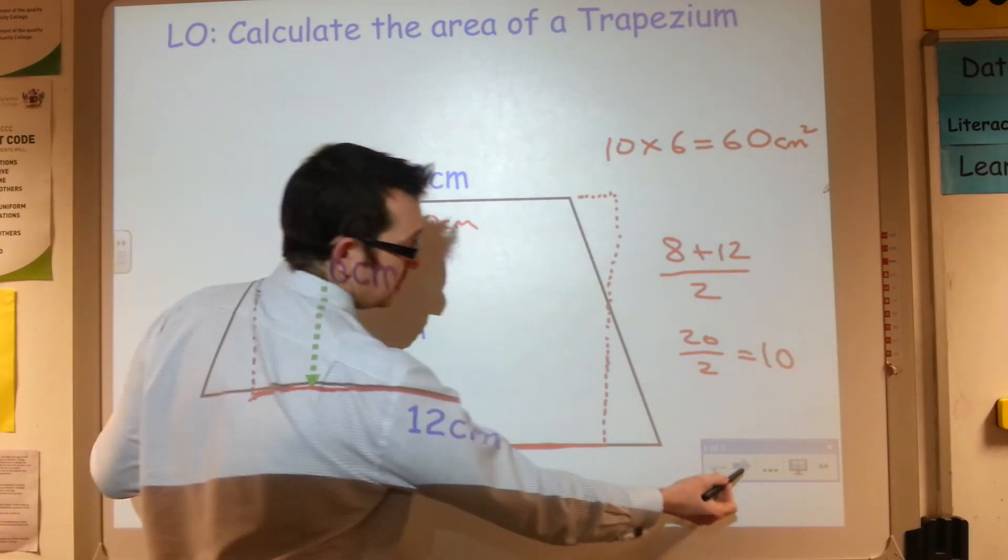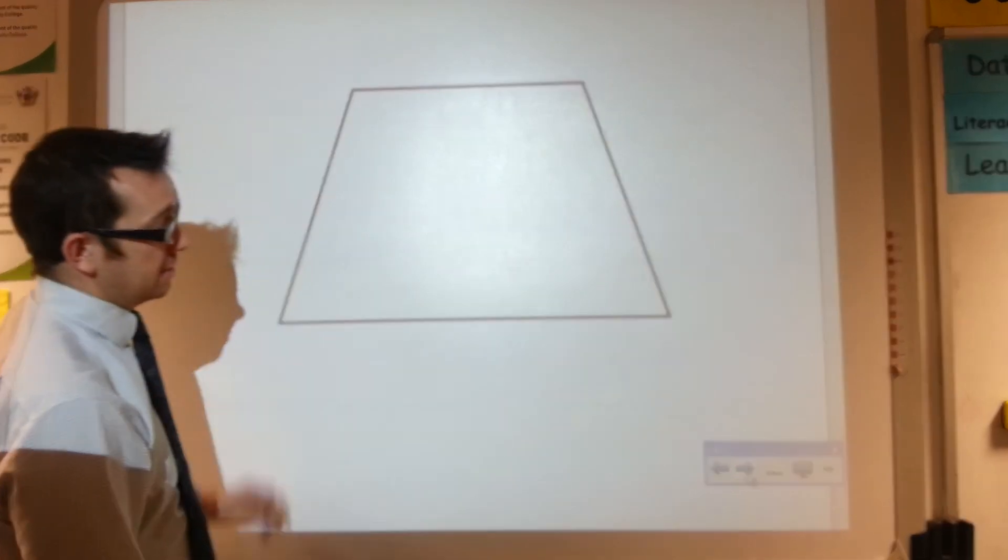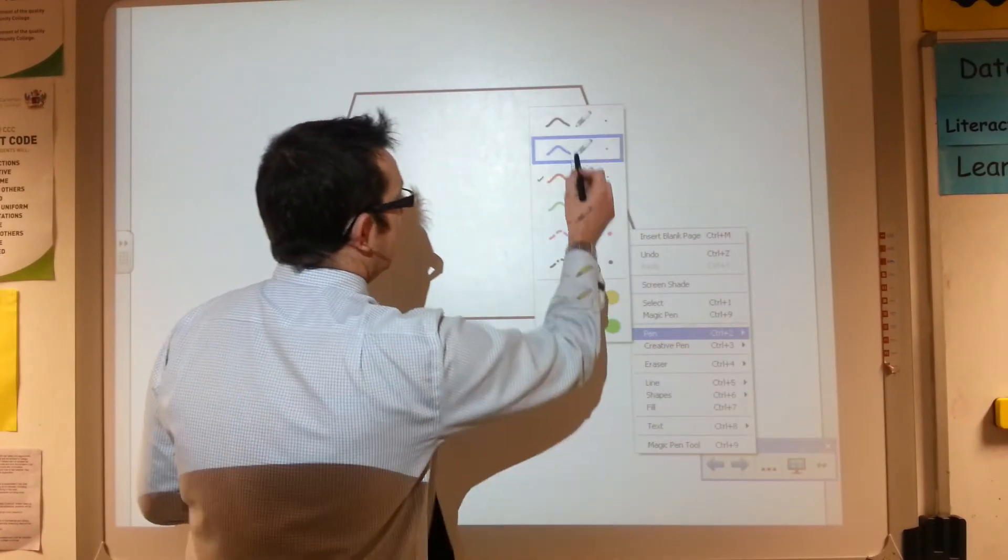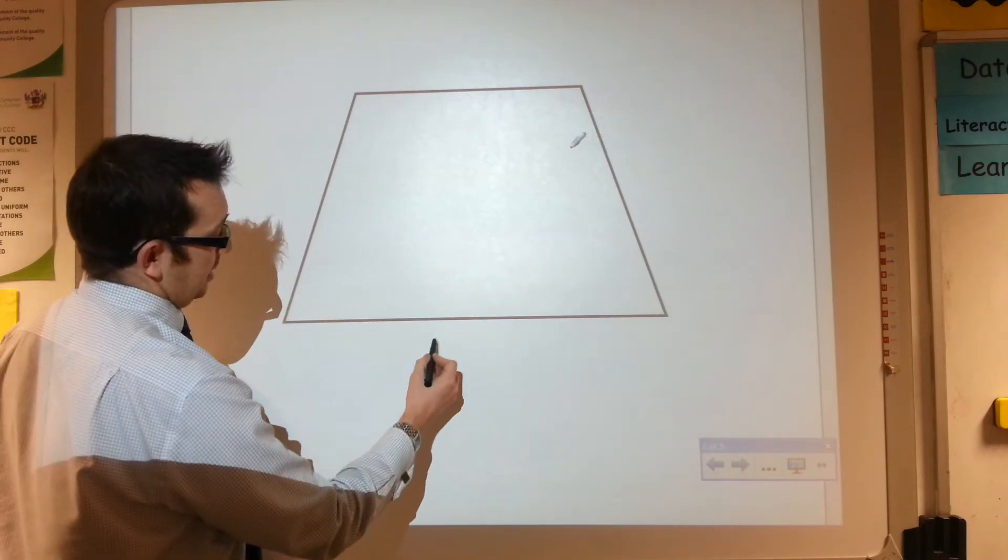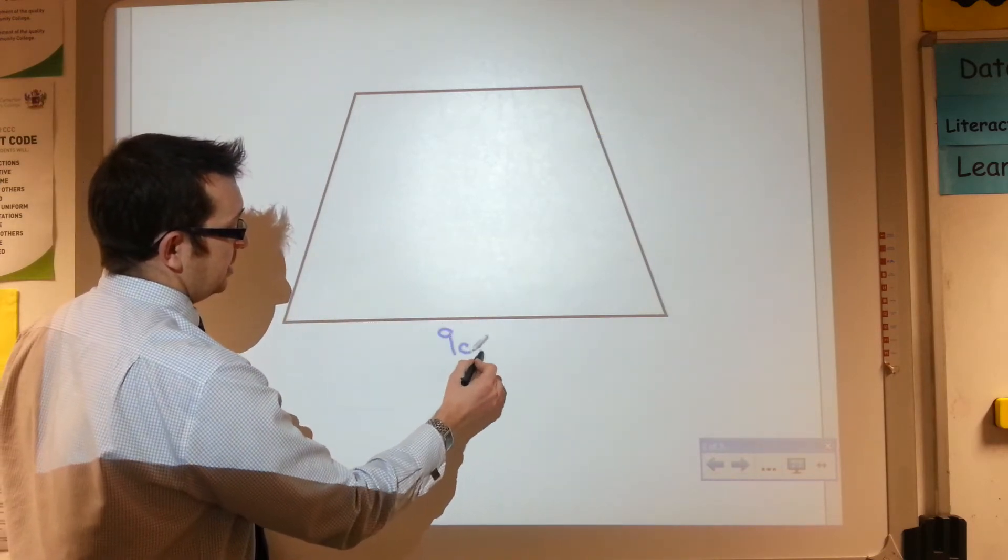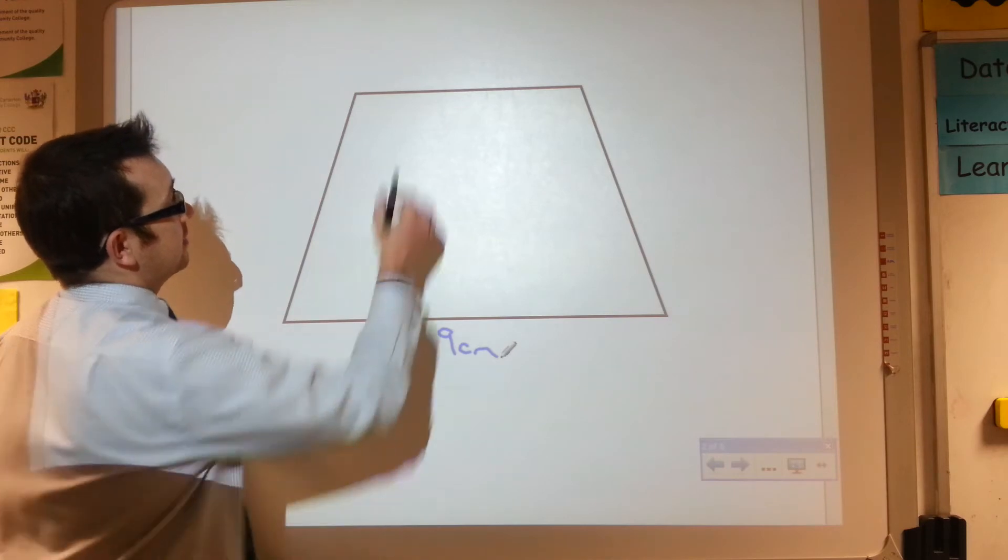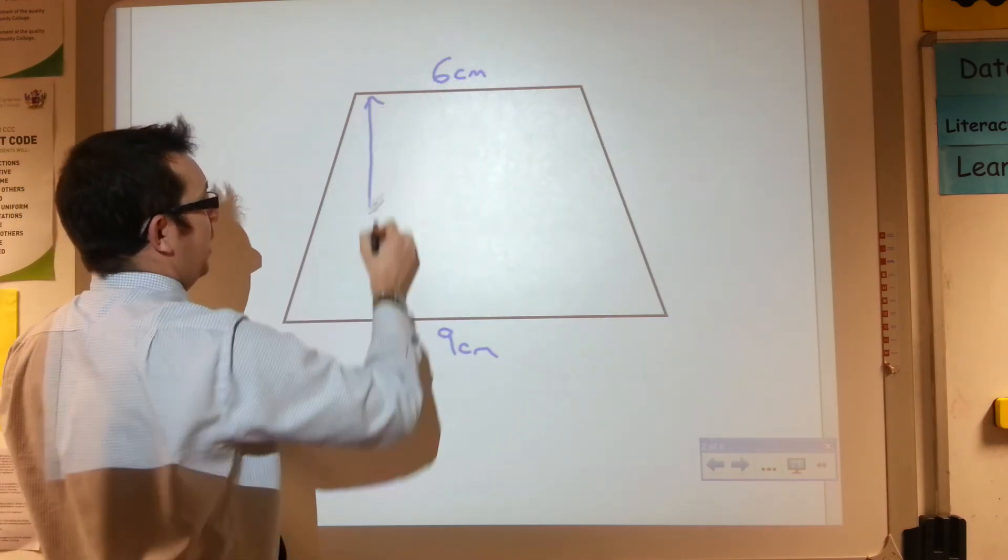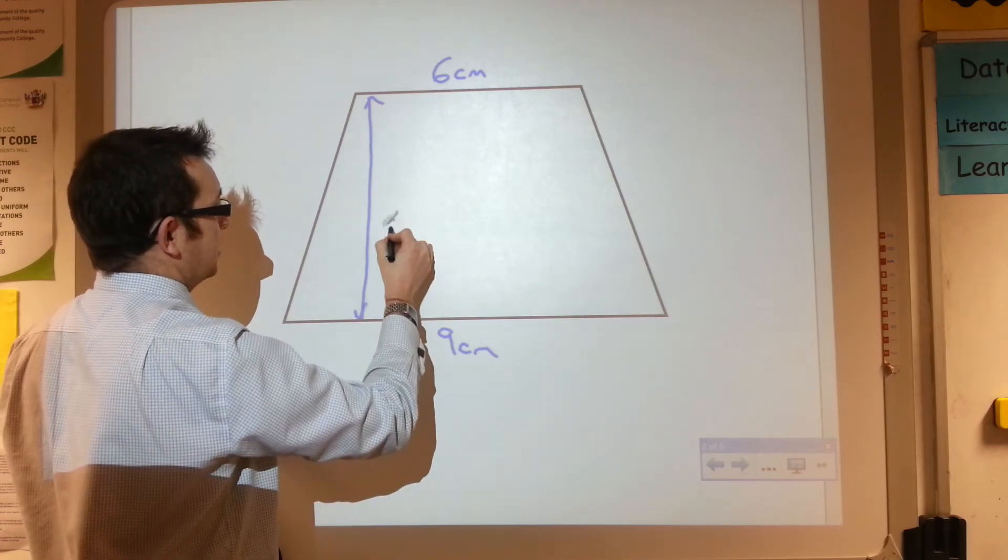So let's do another one just quickly. So this time I'm going to imagine that I've got a length here of, let's say, 9 centimeters, and this length perhaps 6 centimeters, and this length here, or the height here rather, to be 5 centimeters.